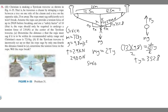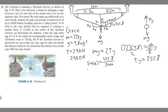We know sine of theta equals opposite over hypotenuse. The opposite is T sub y = 352.8, and the hypotenuse is T = 2,900 newtons. So sine(θ) = 352.8 / 2,900. Taking the arc sine gives us theta equals 6.98 degrees. Keep in mind these two angles in the triangle are the same, so this angle here is 6.98 degrees.